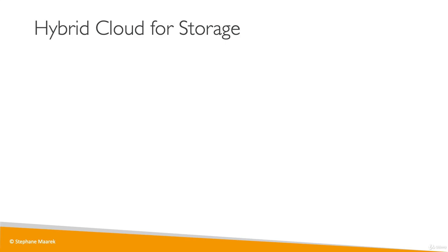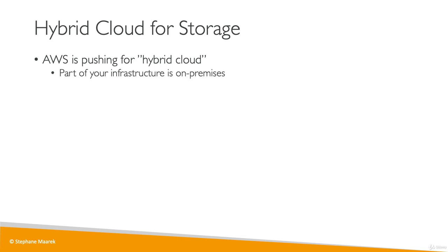We've seen Amazon S3 as a standalone service, but it is possible for you to use it in a hybrid cloud type of setting. AWS wants you to bridge between your on-premises environment and AWS — that's called hybrid cloud. Part of your infrastructure is going to be on-premises, and the rest is going to be on the cloud.